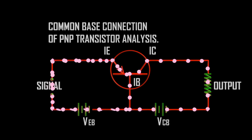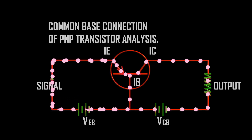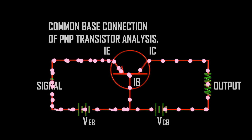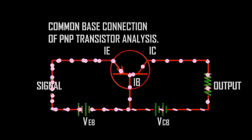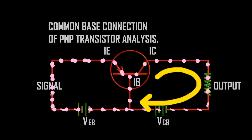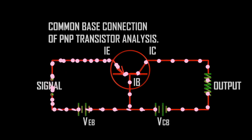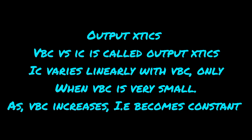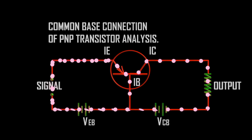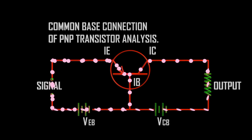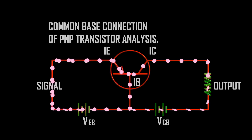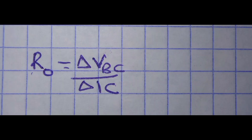Characteristics of common base configuration — Input characteristics: V_BE versus I_E is called the input characteristic. I_E increases rapidly with V_BE, so input resistance is very small. I_E is almost independent of V_CB. Output characteristics: V_BC versus I_C is the output characteristic. I_C varies linearly with V_BC only when V_BC is very small; as V_BC increases, I_C becomes constant. Input resistance R_i equals change in V_BE over change in I_E. Output resistance R_o equals change in V_BC over change in I_C.